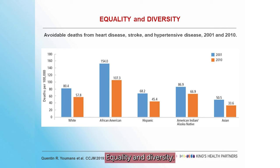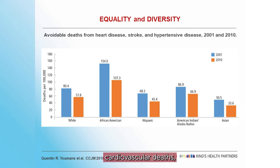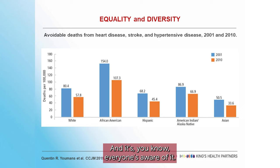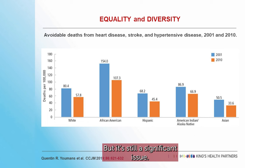On quality and diversity: across Europe and the States, if you look at avoidable cardiovascular deaths, there are clear inequities across the system. A lot of national pathway improvement programmes have this right at the centre of what they're trying to do. It's better than it was, but it's still a significant issue.